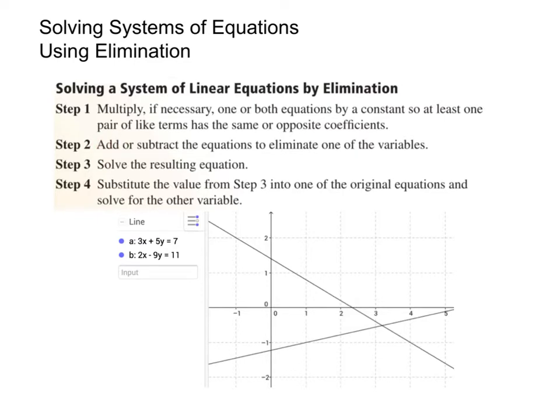After step two, step three will leave us with just an equation that has one variable in it, which we can solve pretty easily. And then step four, we'll take our answer from step three and plug it into one of the original equations in order to solve for the other variable.